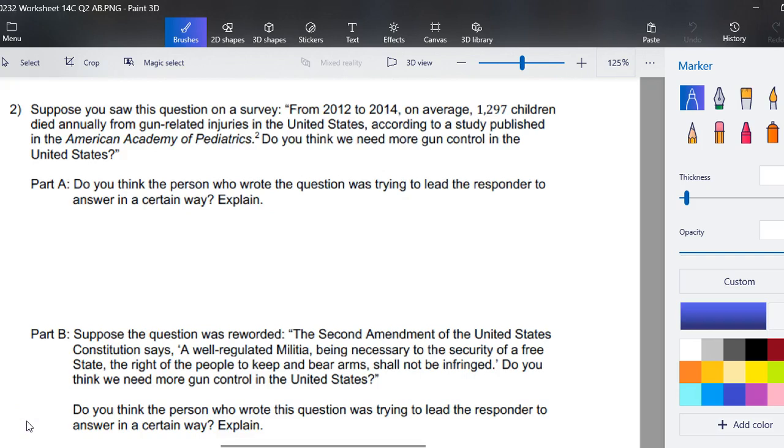So this is a really great time for you to hit pause and go work on questions two and three, at least question two, and then come back and let's look at these together. So looking at question two, suppose you saw this question on a survey. From 2012 to 2014, on average, 1,297 children die annually from gun-related injuries in the United States, according to a study published in the American Academy of Pediatrics.